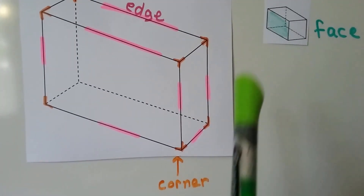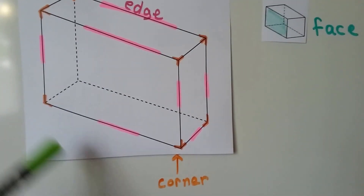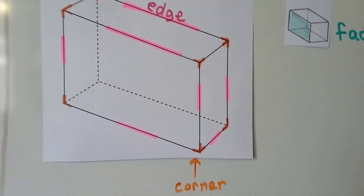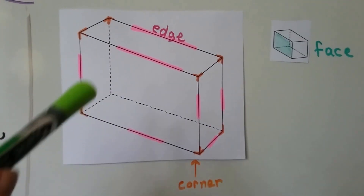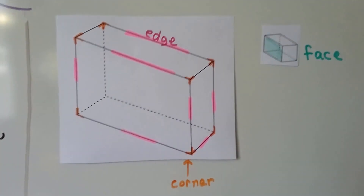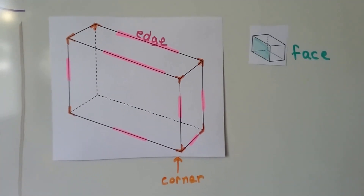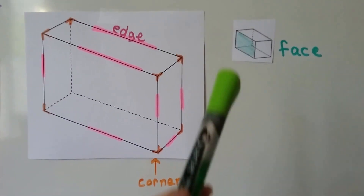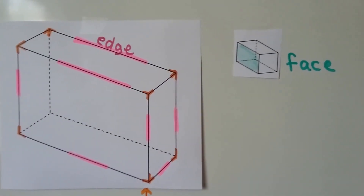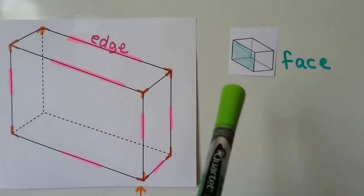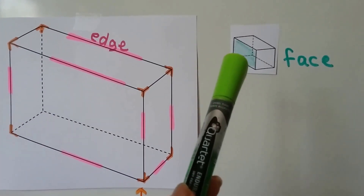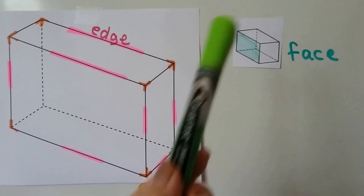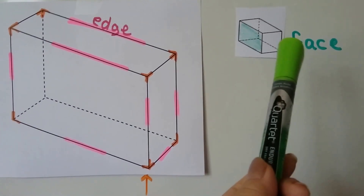Here's another corner, and another one, and then there's one in the back that we can see because it's shown as see-through. Each side is called a face — so this shape has a face on this side, a face on the top, a face on the bottom, and a face on the back side.